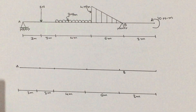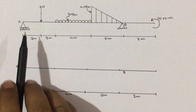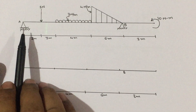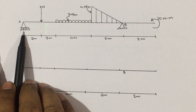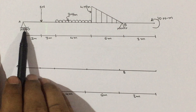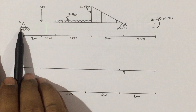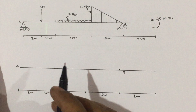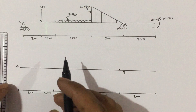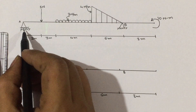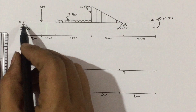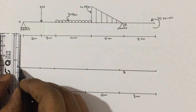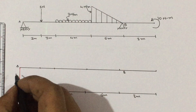Second step: identify the supports and write the support reactions. Here we have a triangle with rollers and a shaded portion — since we have a roller, it is a roller support. Roller support has only one reaction, and it acts perpendicular to the roller plane, that is vertically upwards. Write the reaction at point A — since it is vertical, we call that reaction VA.